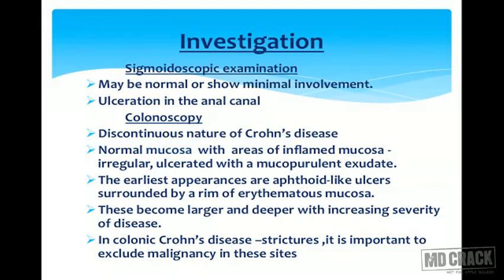Investigations: Sigmoidoscopy may be normal or show minimal involvement, and ulceration might be seen in the anal canal. On colonoscopy, the discontinuous nature of Crohn's disease — skip lesions — will be seen, with normal mucosa interspersed with areas of inflamed, irregular, ulcerated mucosa with mucopurulent exudate. The earliest appearances are of aphthoid-like ulcers surrounded by a rim of erythematous mucosa, becoming larger and deeper with increasing severity. In colonic Crohn's, strictures make it important to exclude malignancy at these sites.